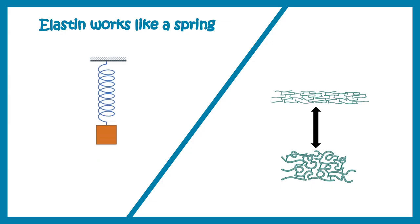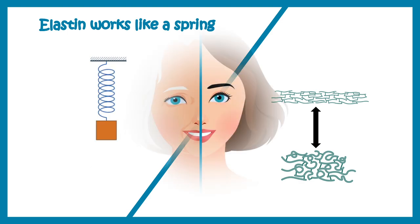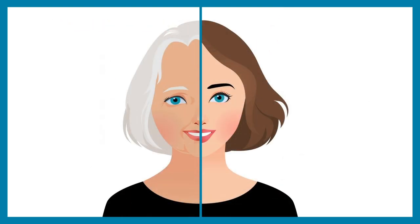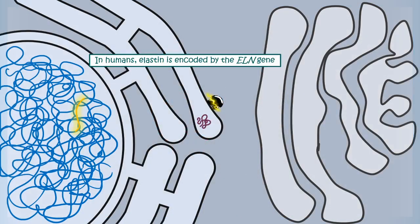Elastin is very important in terms of structural and mechanical aspects. Probably the loss of elastin fibers is one of the causes of wrinkling and aging in humans. Elastin is encoded by the ELN gene, which is a pretty big gene.